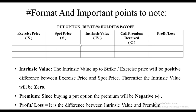The exercise price and spot price will be given in the question. We need to first find the intrinsic value. The intrinsic value up to the point where your strike and exercise price are equal — before that it will be the positive difference between the exercise and spot price, and thereafter the intrinsic value will become zero.